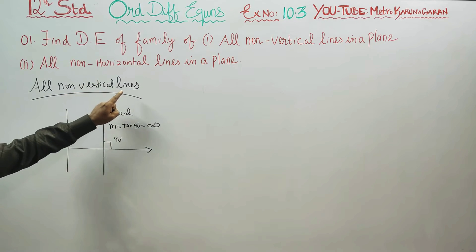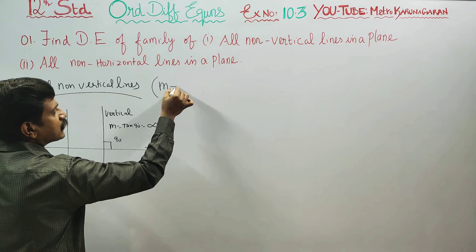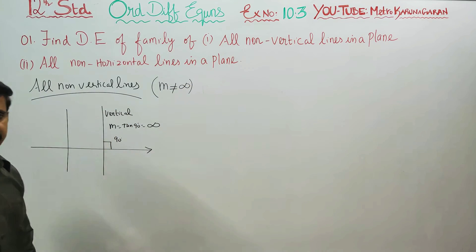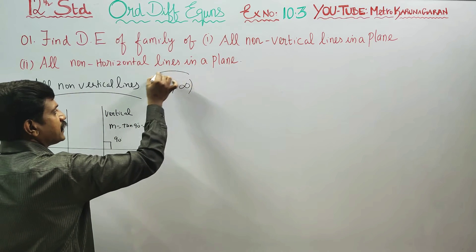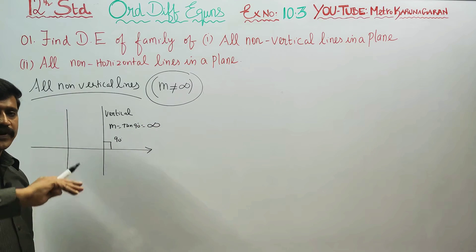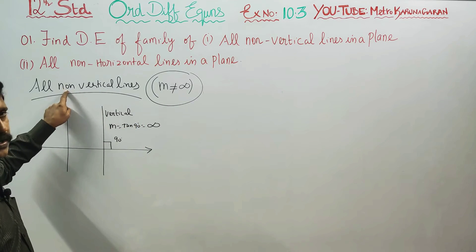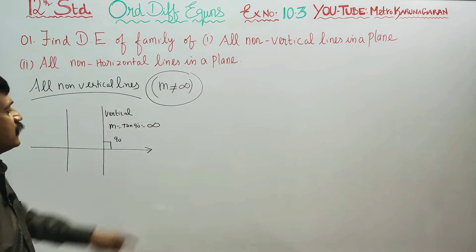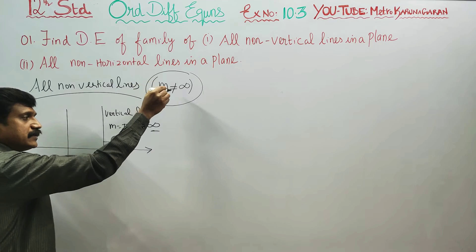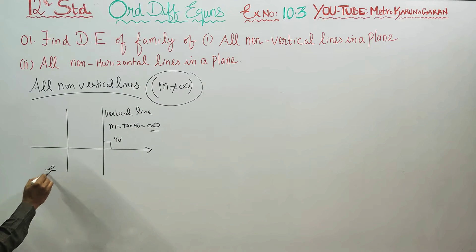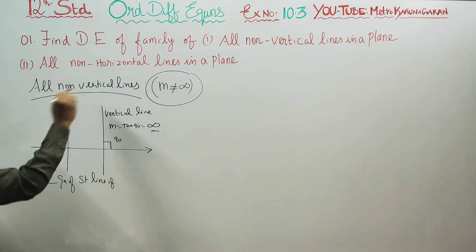And this is the non-vertical line. A non-vertical line simply means the slope is not equal to infinity. All non-vertical lines will have a slope not equal to infinity. If slope is infinity, it is a vertical line; if slope is not infinity, it is a non-vertical line.